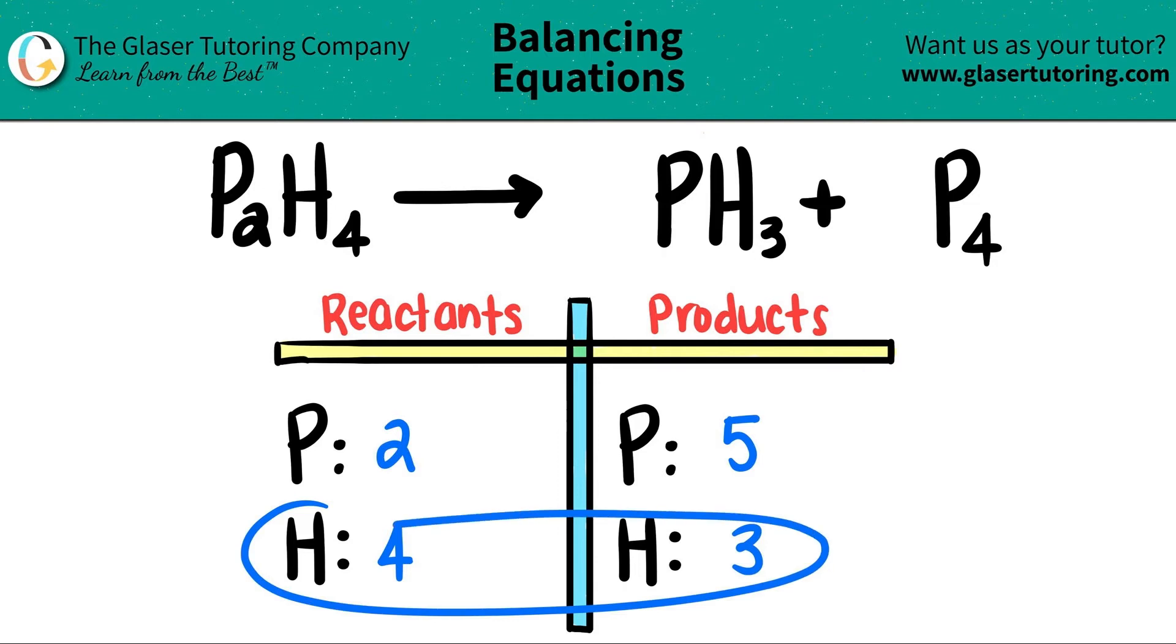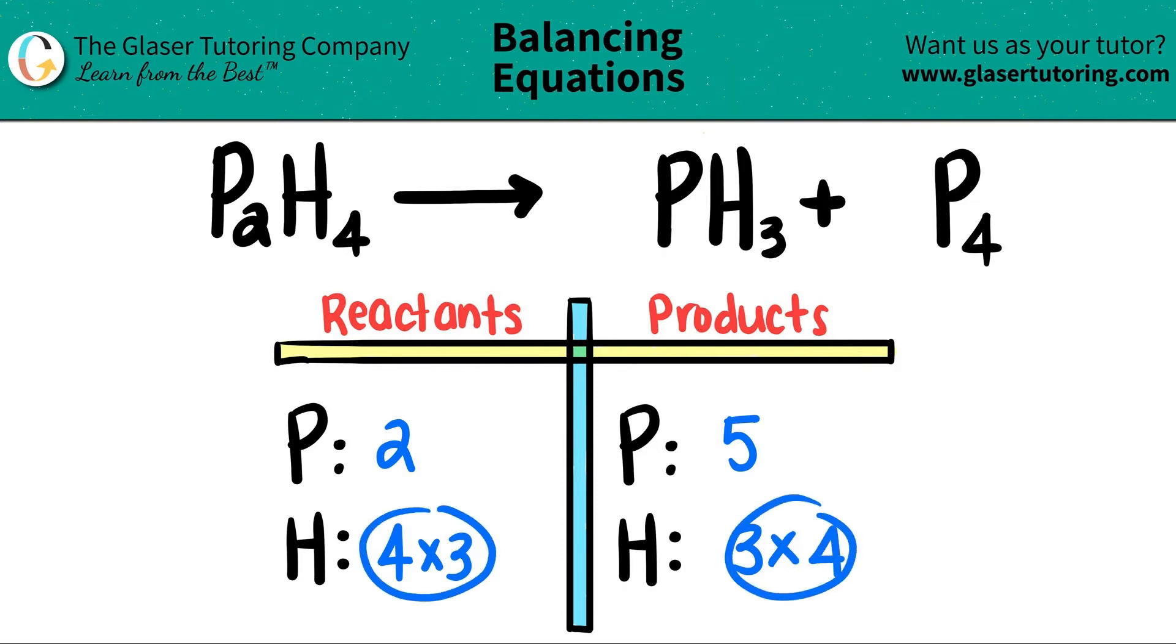Hydrogen, I can just easily say four times three and three times four. And by doing that, they'll both equal to 12, right? And whatever number that you say is being multiplied, those are the coefficients of the elements that have those, of the compounds that have those elements. So I'm going to put a three here and a four here.